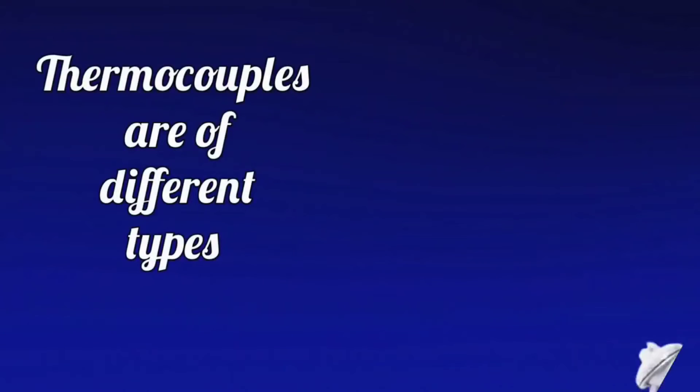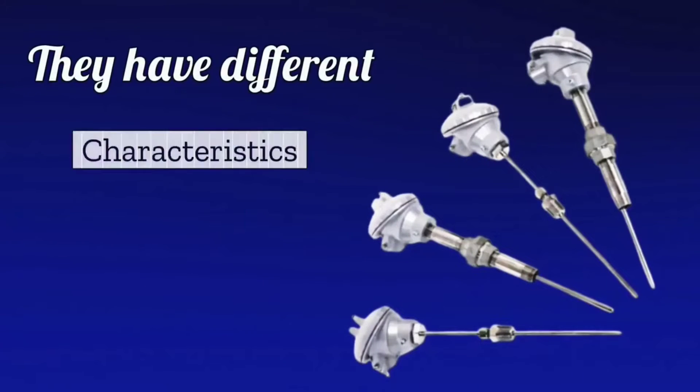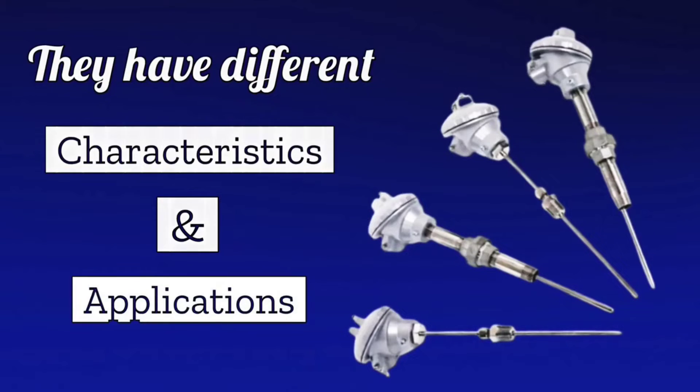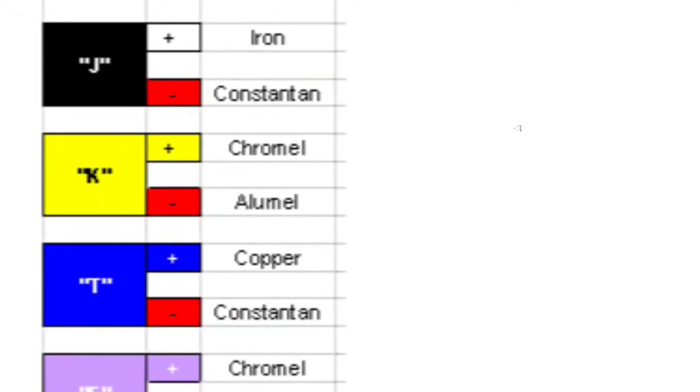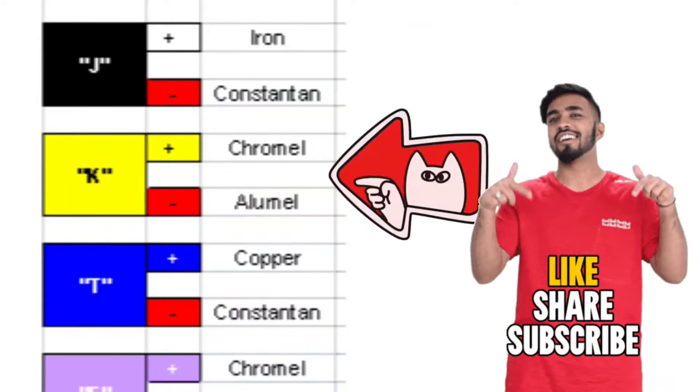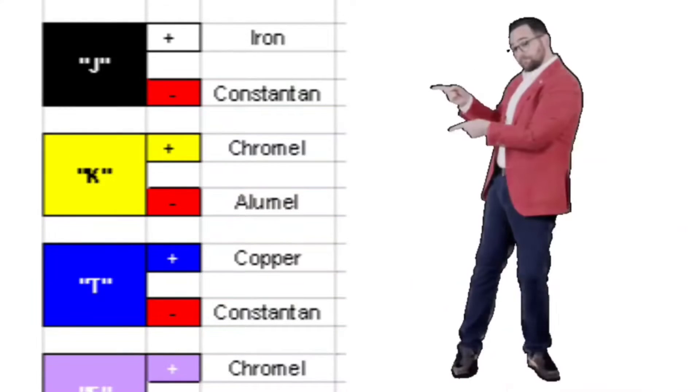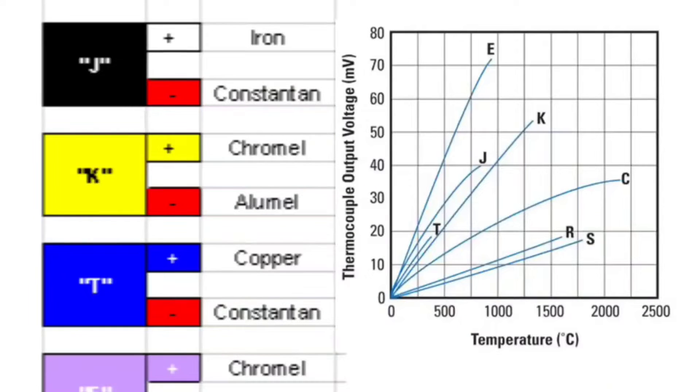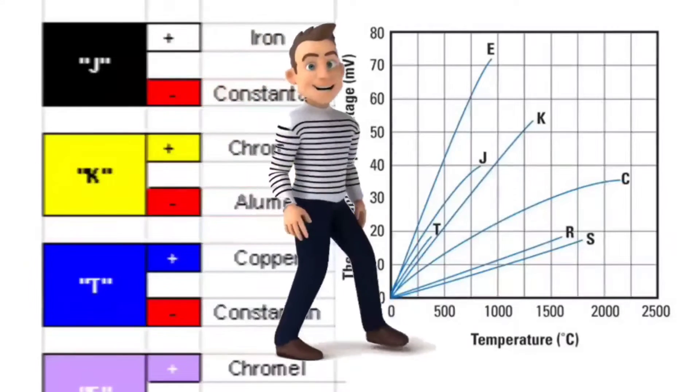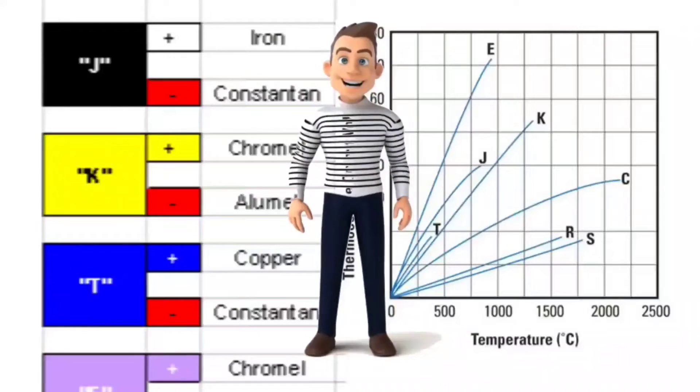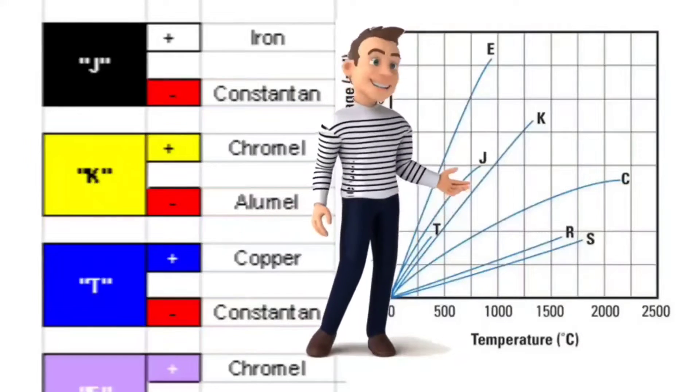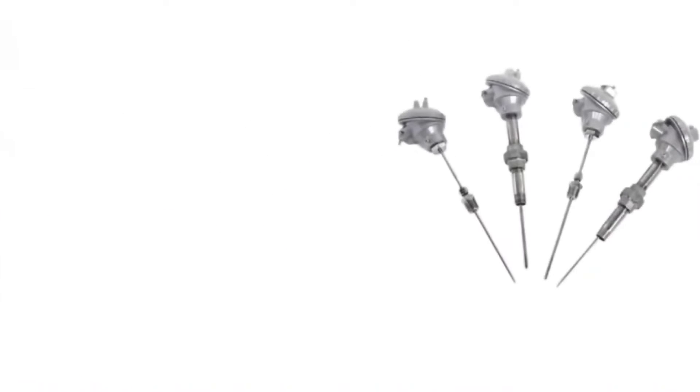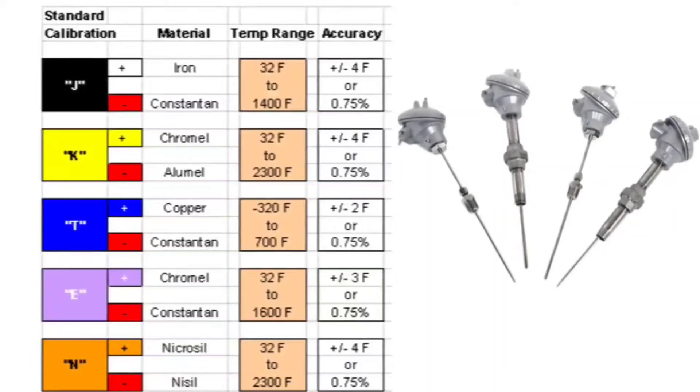Thermocouples are of different types. They have different characteristics and applications. In different types of thermocouples, different combinations of metals are used, like chromel, alumel, copper, and constantan. Each combination has its own unique voltage temperature characteristics curve. On this basis, thermocouples are of different types like J-type, K-type, and many other types. Thermocouples are selected and used according to temperature ranges and accuracy requirements.